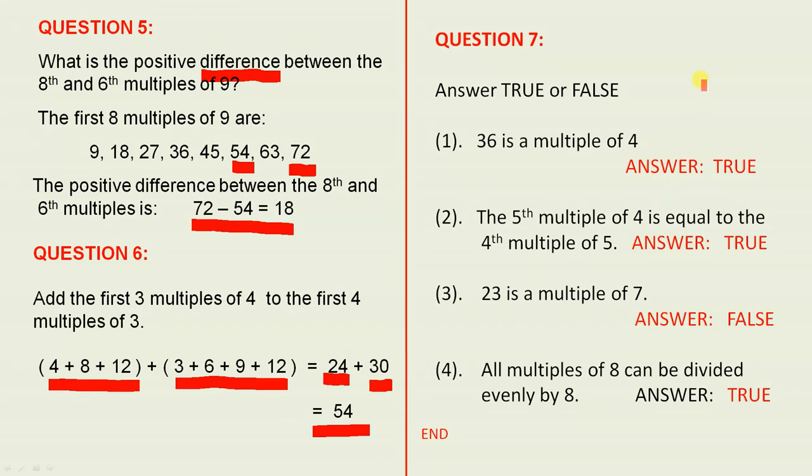Answer true or false: 36 is a multiple of 4. Now we have to work out in our head: 4 times what gives you 36? 4 × 9 = 36. So the answer is true.